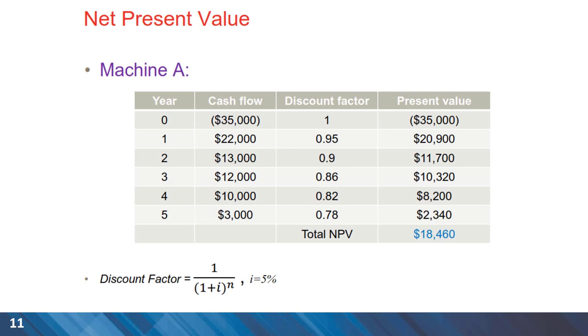So present value is the product of dollar value and the discount factor for every year. The total net present value is the sum of the present values we have in the right-hand column of the table. For Machine A, it is $18,460.